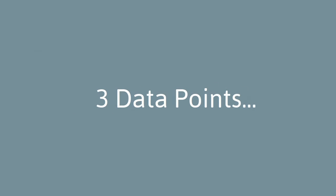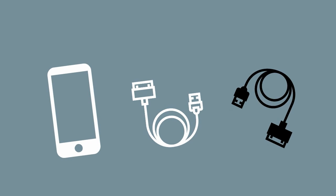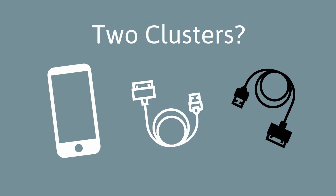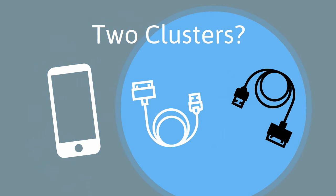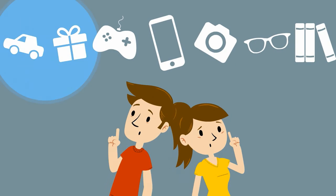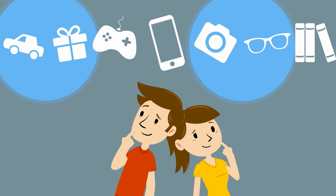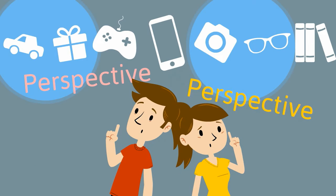For example, consider three data points: an iPhone, an iPhone charger, and a third-party phone charger. How would you cluster them into two groups? While one may separate iPhone products from the rest, others may put the two chargers into the same group when comparing charger prices. In other words, different people may cluster the same data set in different ways following their own perspectives.